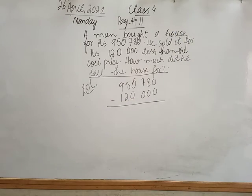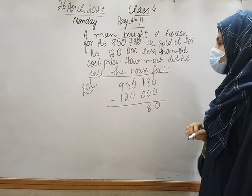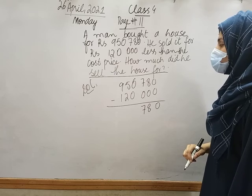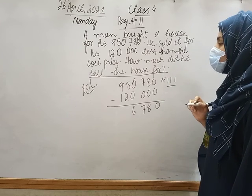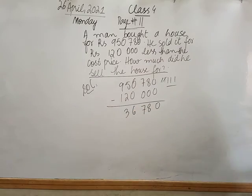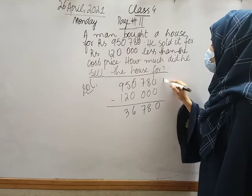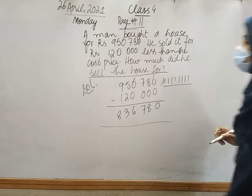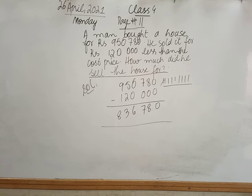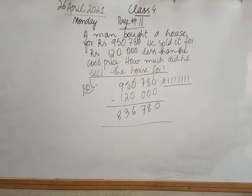I will solve from the right side and subtract one by one. 0 minus 0 is 0, 8 minus 0 is 8, 7 minus 0 is 7, 6 minus 0 is 6, 5 minus 2 — how many are left? 3. And 9 minus 1 — how many are left? 8. So in total we have 836,780. This is the selling price — the price at which he sold the house.